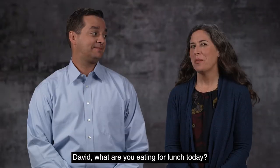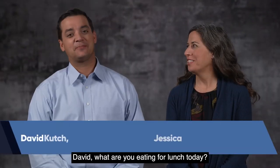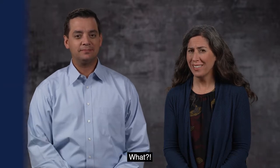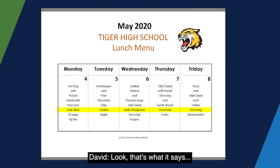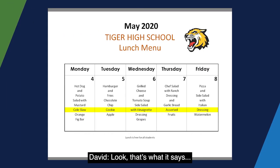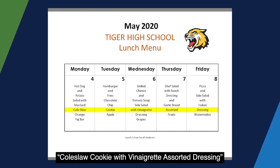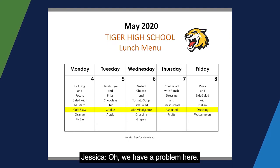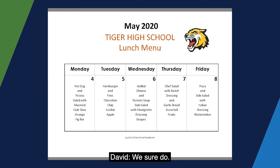David, what are you eating for lunch today? Let's see. Coleslaw cookie with vinaigrette assorted dressing. What? Look, that's what it says. Coleslaw cookie with vinaigrette assorted dressing. Oh, we have a problem here. We sure do.